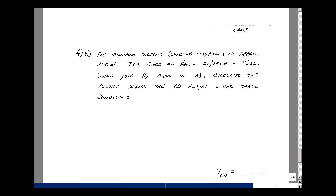When the songs are playing, the current drops to about 250 milliamps. That's equivalent to having about a 12 ohm resistor. Using the value of R2 that you picked in 4A, could you calculate the voltage across the CD player under these conditions?